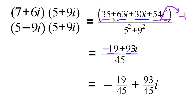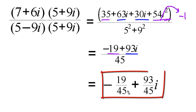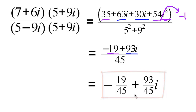Combining like terms in the numerator: the real parts 35 and negative 54 give negative 19. The imaginary parts 63i plus 30i give 93i. So we get negative 19 plus 93i, all divided by 106. You can write it this way, or split the real and imaginary parts as negative 19 over 106 plus 93 over 106 times i.